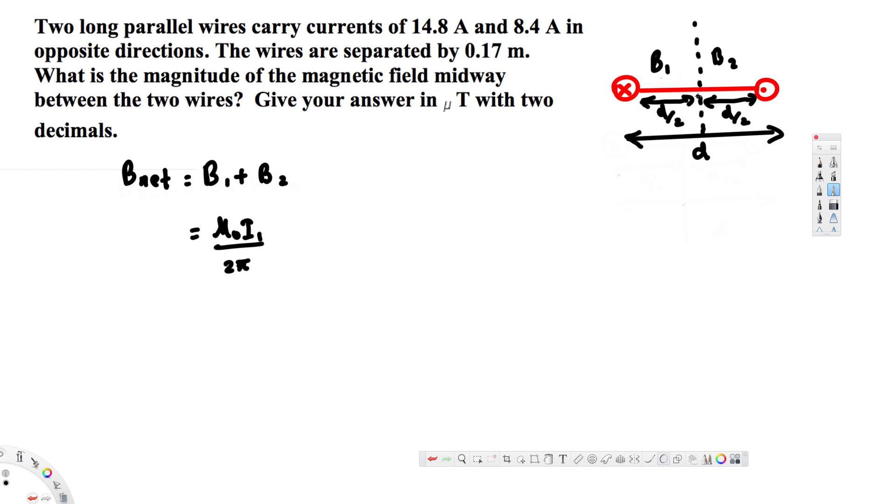So this is for B1. Now for B2 we are going to have mu naught I2, because we have different currents—14.8 and 8.4—so that's why I2, divided by 2 pi times d by 2. The distance is the same for this wire and this wire because we are trying to find the magnetic field midway.